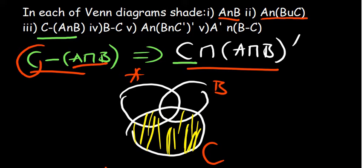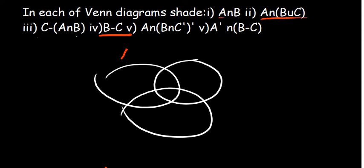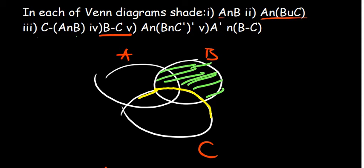If you want, you can also change your form — you can approach it by shading C, then intersecting with A intersection B complement, and you'll still come up with the same solution. Let's look at the fourth one. B minus C — this one is straightforward. B minus C means a region of B without C. We're required to shade B without C, so we're only going to shade the region of B without C. Remember, this part is part of C, so we're going to exclude it. We are only interested in the region of B without it — the entire region of B except the part which is also part of C.